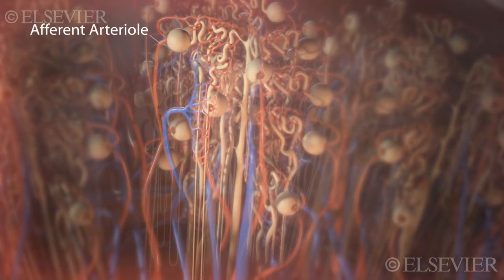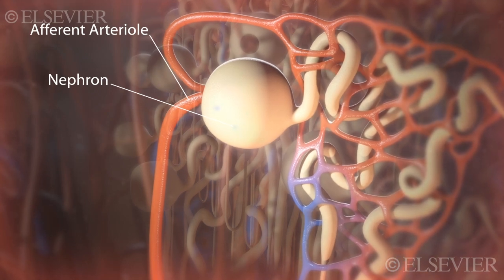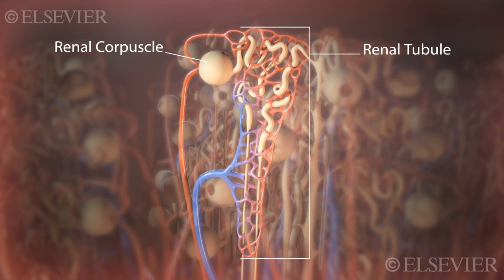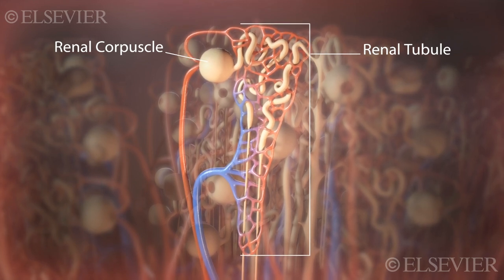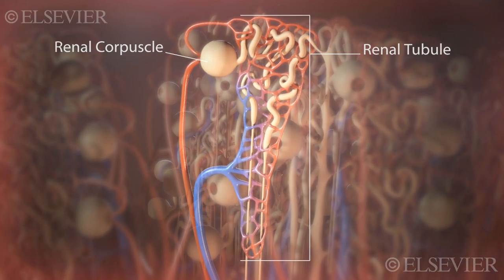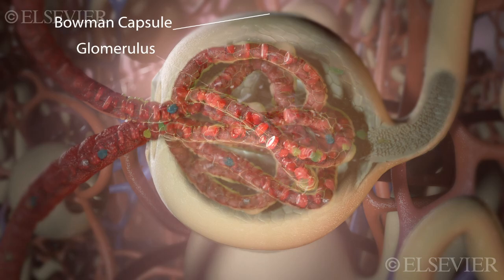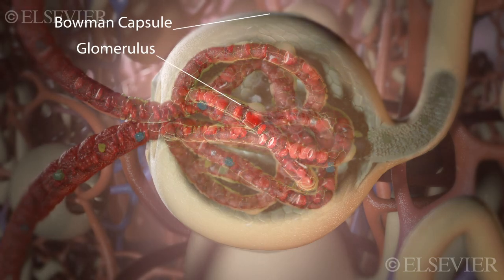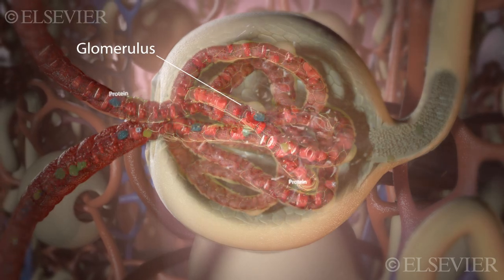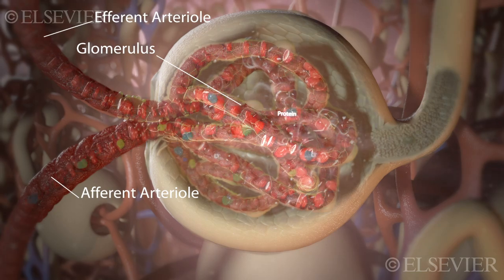The afferent arterioles carry blood directly into the nephrons, which are the functional units of the kidney. The nephron consists of two parts: the renal corpuscle and the renal tubule. The renal corpuscle is the first part of the nephron and makes up most of the kidney's cortex. It consists of a Bowman capsule and the glomerulus, which is made up of loops of capillaries and is completely surrounded by the Bowman capsule. The afferent arteriole is larger in diameter than the efferent arteriole, which exits the glomerulus.